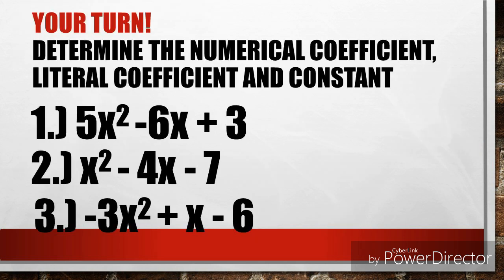It's your turn. We're going to determine the numerical coefficient, the literal coefficient, and the constant. Number 1: 5x squared minus 6x plus 3. Number 2: x squared minus 4x minus 7. And number 3: negative 3x squared plus x minus 6.